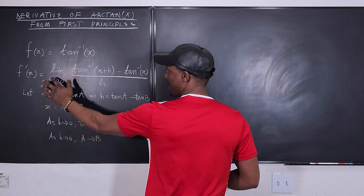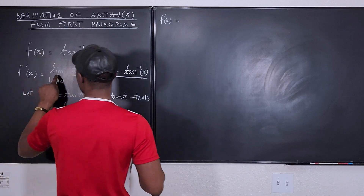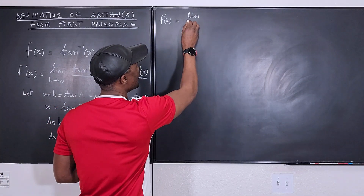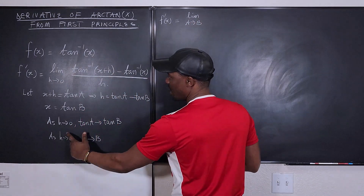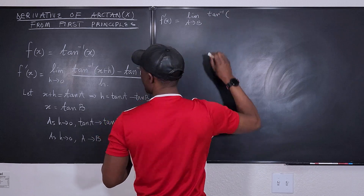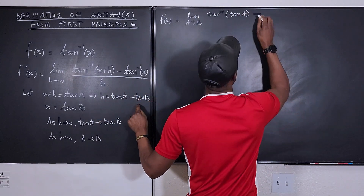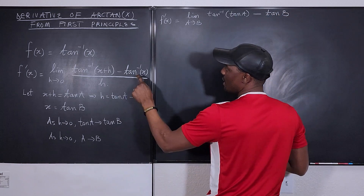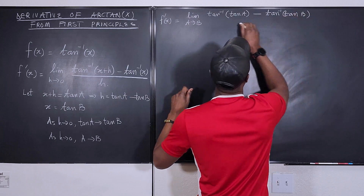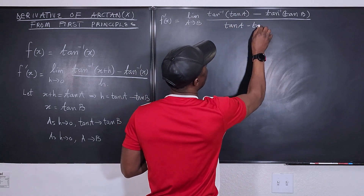Now we plug everything back in. f prime of x equals the limit as a goes to b of: arctan of x plus h, which is arctan(tan(a)), minus arctan of x, which is arctan(tan(b)), all divided by h, which is tan(a) minus tan(b). So we have the limit as a goes to b of [arctan(tan(a)) minus arctan(tan(b))] over [tan(a) minus tan(b)].